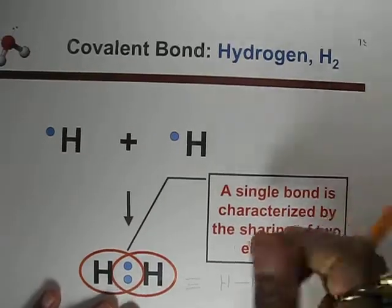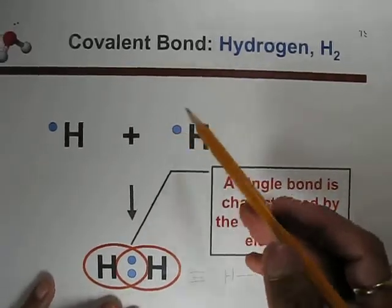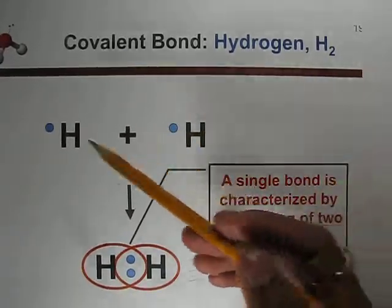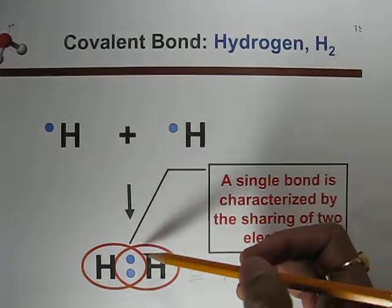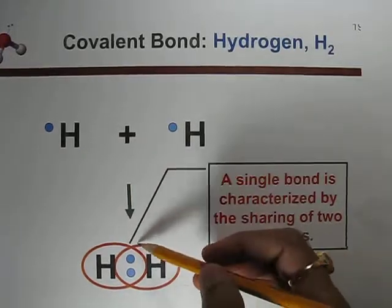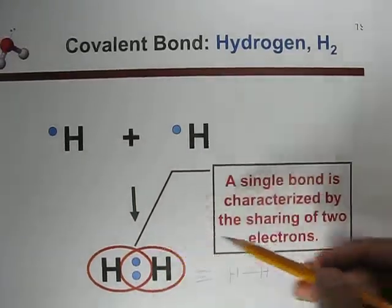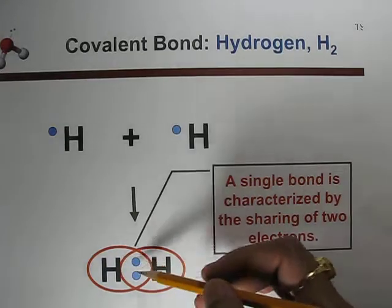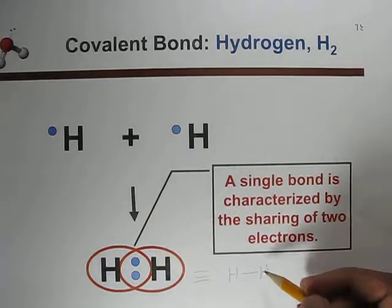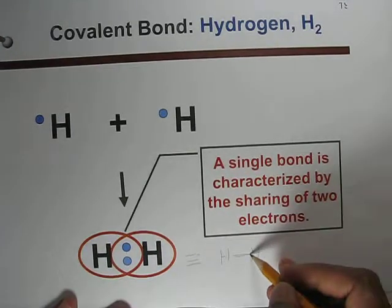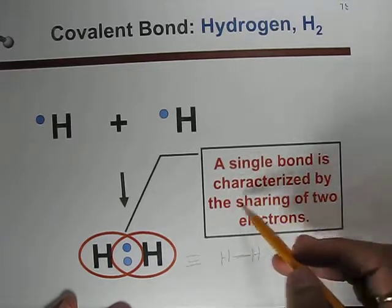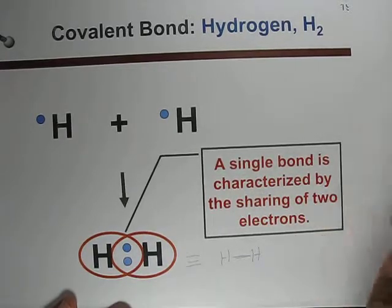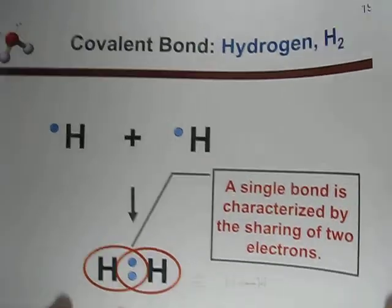In covalent bonding, hydrogen has one electron each. When sharing occurs, you count the two electrons represented by a single bond — shown as a single line. A single bond is characterized by the sharing of two electrons.